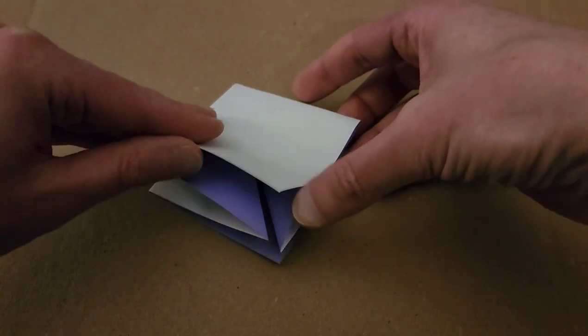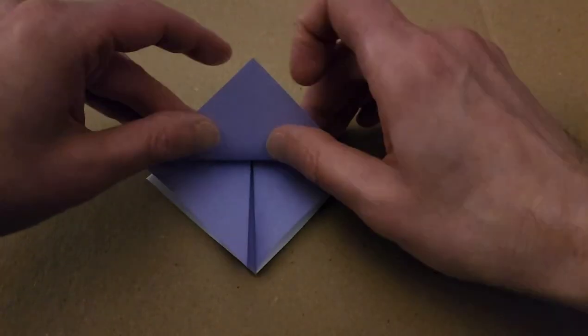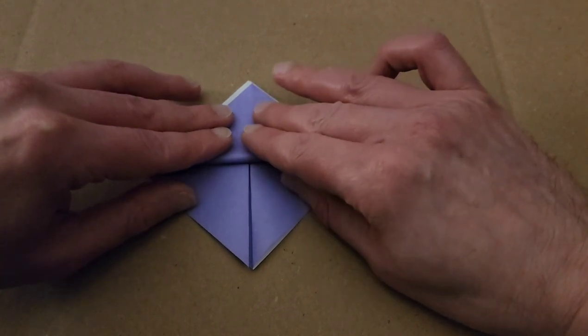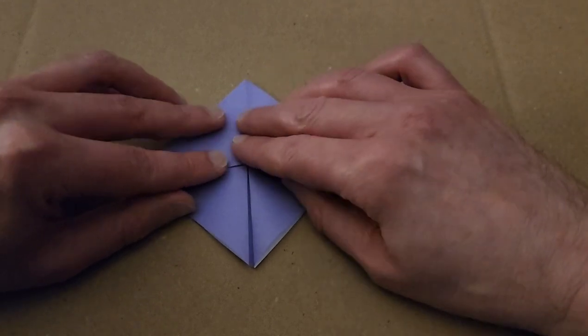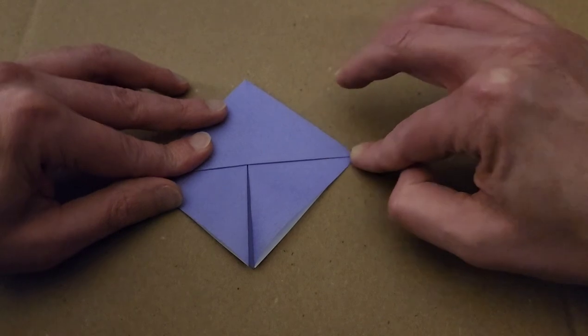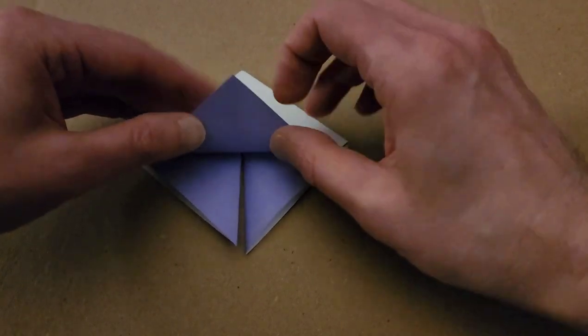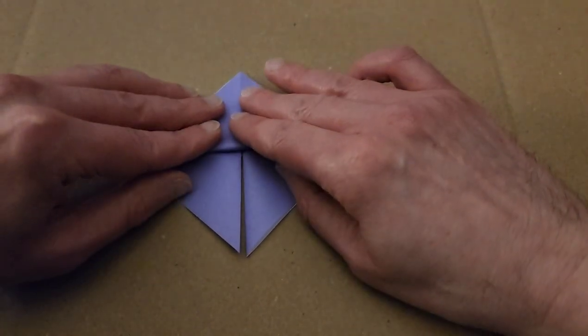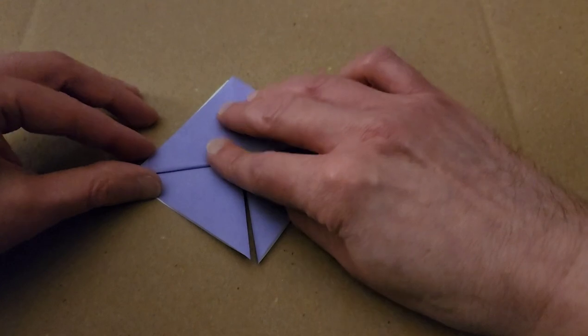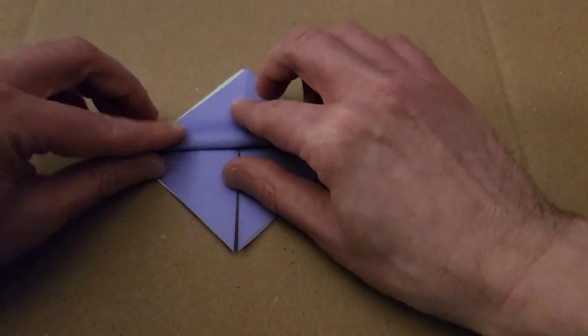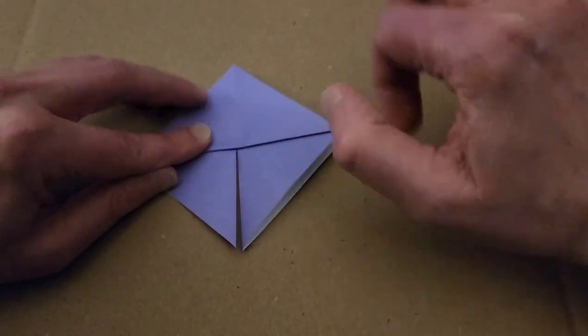All right, so from this point, we're just going to be working with this top flap here, and folding this point to the opposite point. And this is where it starts to differ from a lot of other pieces. And then flip it over and do the exact same thing. Just this top flap here. Okay, it went a little too far. There we go.